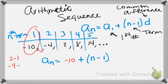So negative 4 minus negative 10, which, two minuses make a plus, and negative 4 plus 10 is 6.